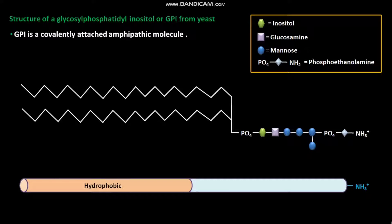The hydrophobic portion of the GPI is composed of fatty acyl chains. The polar or hydrophilic portion of the GPI is composed of carbohydrate residues like inositol, glucosamine, mannose, and phosphate groups.